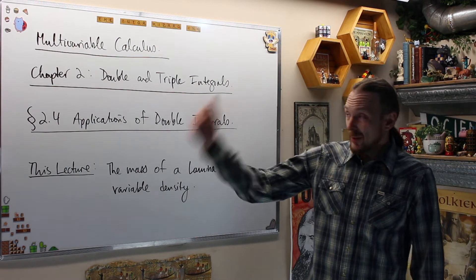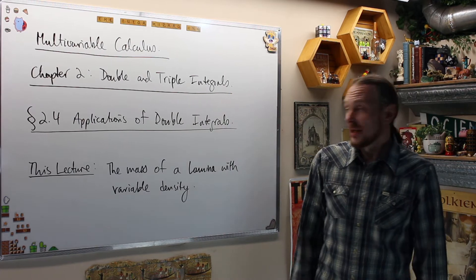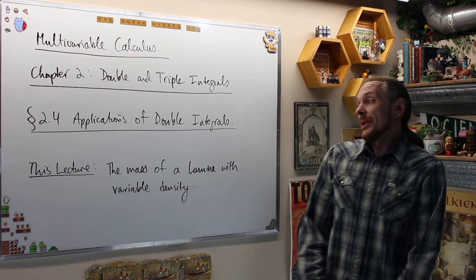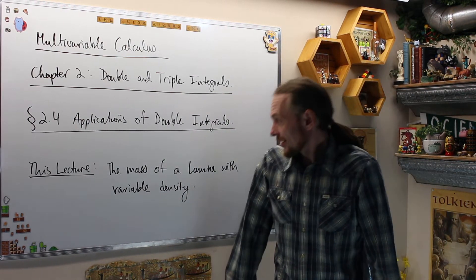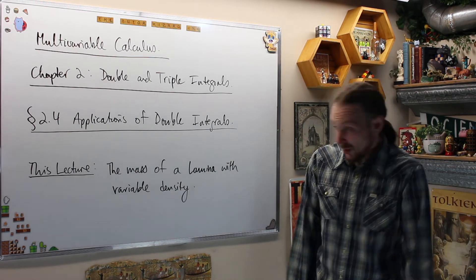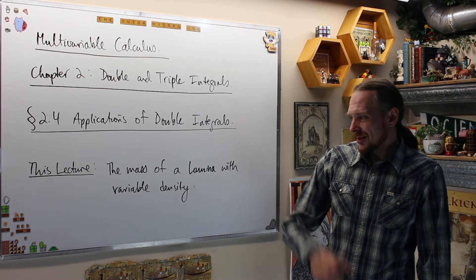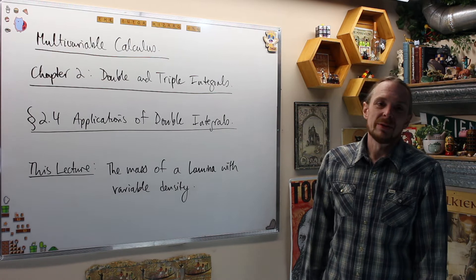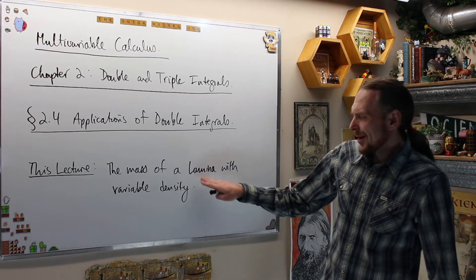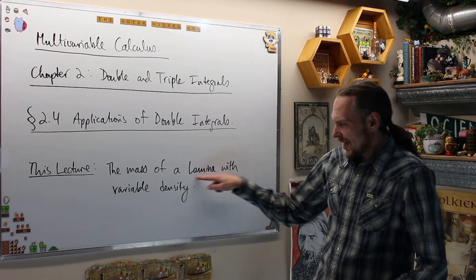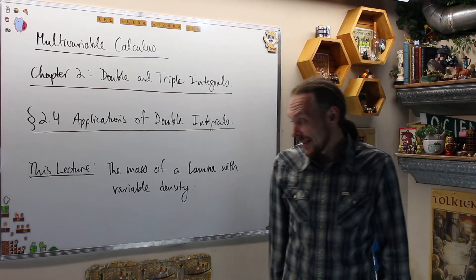We're doing multivariable calculus, we're in chapter 2 which is double and triple integrals, and we're doing today the application of double integrals — which is some of the more interesting stuff. This time specifically we're going to start off with the mass of a lamina or a planar region — that's our fancy math term for some kind of region in the plane.